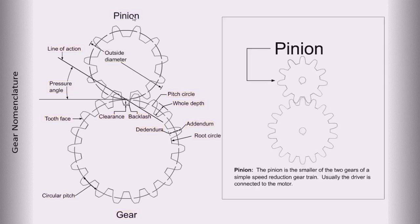Pinion. The pinion is the smaller of the two gears of a simple speed reduction gear train. Usually, the driver is connected to the motor.